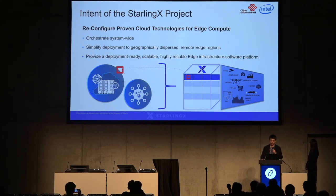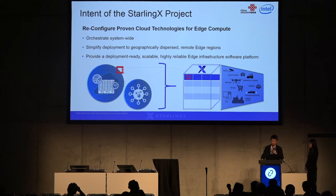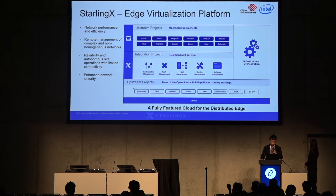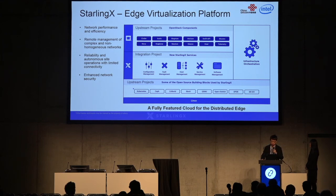StarlingX is a combination of open-source components giving reconfigurability of proven technology for the edge cloud. It also provides system-wide orchestration and simple deployment to geographically dispersed remote edge regions. It is a deployment-ready solution with quite a lot of enhancements including reliability, high availability, and so on. StarlingX is the edge virtualization platform composed of two parts: StarlingX services in the middle, and upstream projects which include OpenStack components — Nova, Neutron, Cinder, Swift — and other components like Kubernetes, OVS-DPDK, libvirt, and so on. In today's presentation we are mainly focused on how StarlingX is dealing with network requirements at the edge.